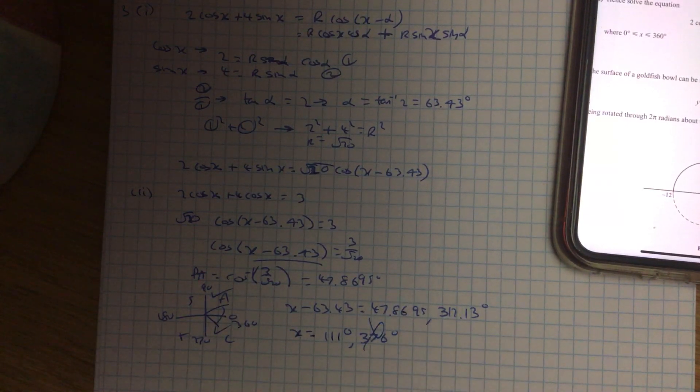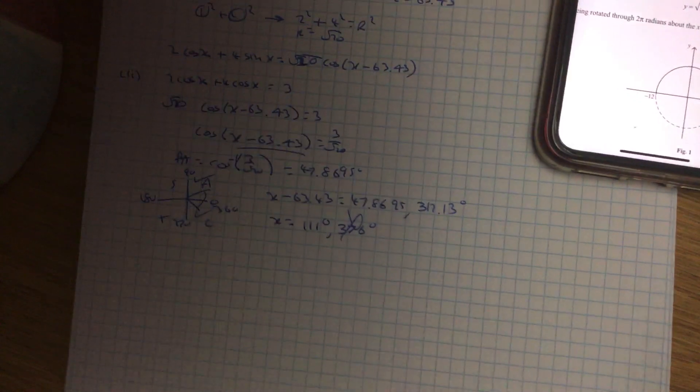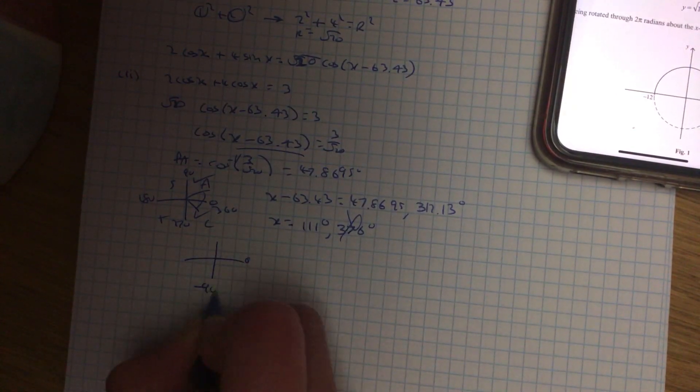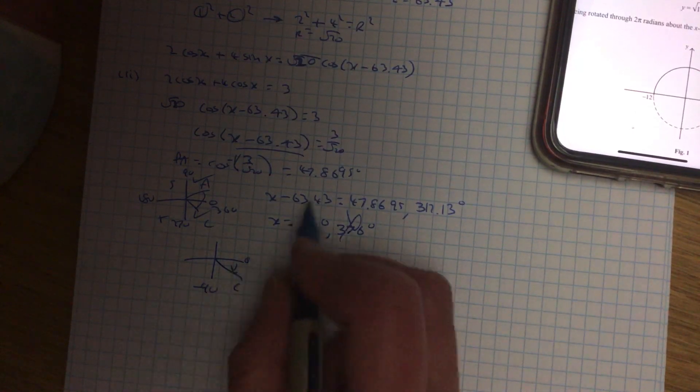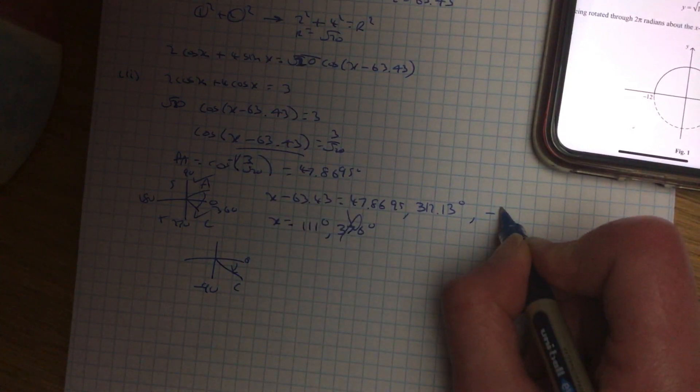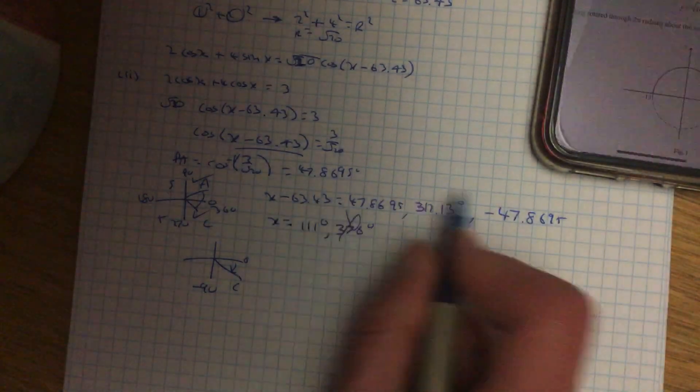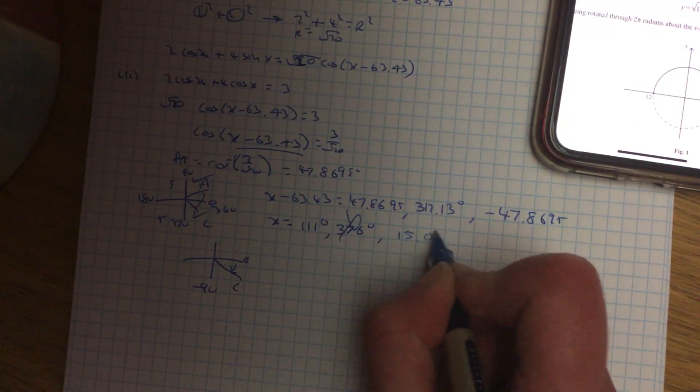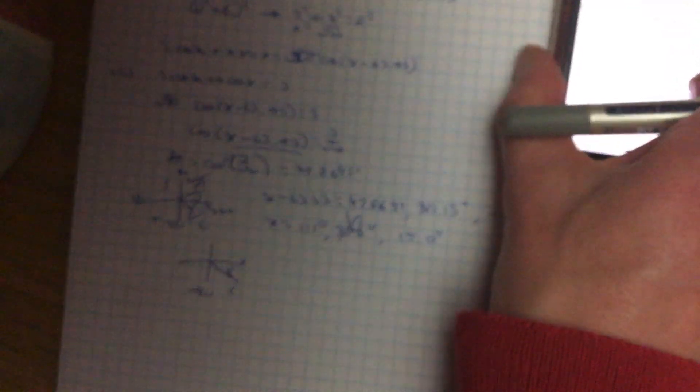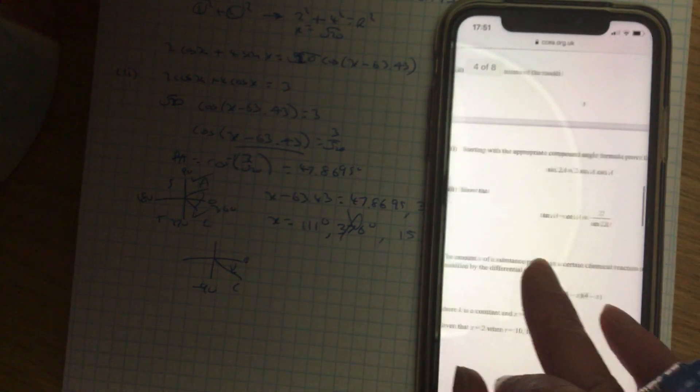That is outside the range of 0 to 360, so what I'm going to do to get my second angle, I'm actually going to go around and cast the opposite direction. So in this quadrant, it's minus 47.8695, so I'm just going to pop that on here. When I bring my 63 over and add it on, I get the second angle there of 15.0. I always try to give two answers to those questions, and the last question I've got to do in this paper is question 5.